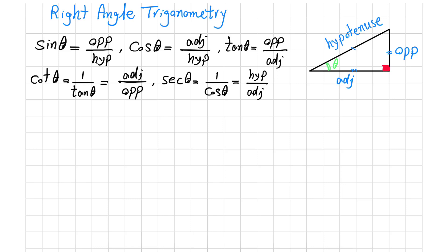Also, we have the concept of cosecant of theta, which is the inverse of sine of theta, equal to the hypotenuse divided by the opposite side.